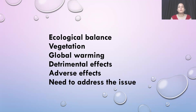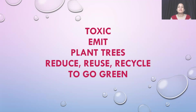Next is 'need to address the issue' — the problems are there and there's a need to solve them, to have a curb on the issues. 'Address' is a formal word. Next, 'toxic' — toxic means poisonous substance. Carbon dioxide is toxic for a healthy environment. 'Emit' means release — harmful gases are emitted. As a solution, there is a need to plant trees. 'Plant' here is used as a verb. Another solution: reduce, reuse, and recycle — the three R's, which are very popular. We should reduce wastage, prefer reusing if required, and recycle when possible.